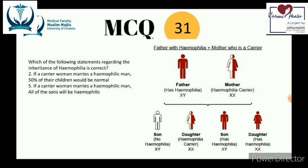A key characteristic of X-linked inheritance is that fathers cannot pass X-linked traits to their sons — it is the mothers who pass the X-linked trait to sons. So if a father has hemophilia, sons will not get the disease unless the mother also carries the mutated gene.